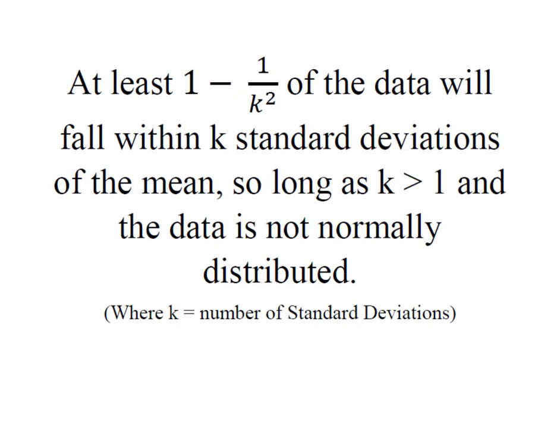Instead, with non-normal distribution, we will employ Chebyshev's theorem that says at least 1 minus 1 over k squared percentage of the data will fall within k standard deviations of the mean. And we can use this as long as k is greater than 1 and the data is not normally distributed.